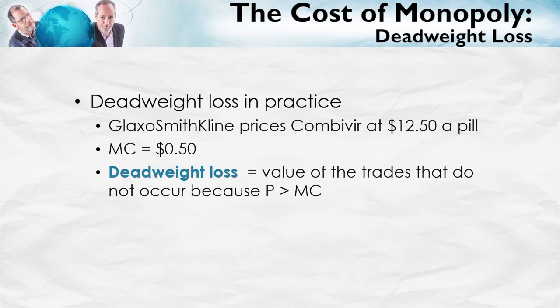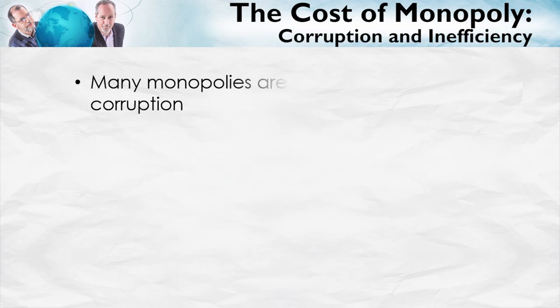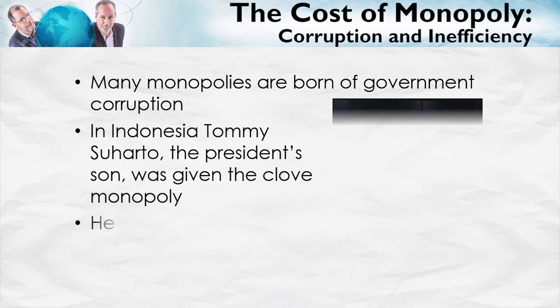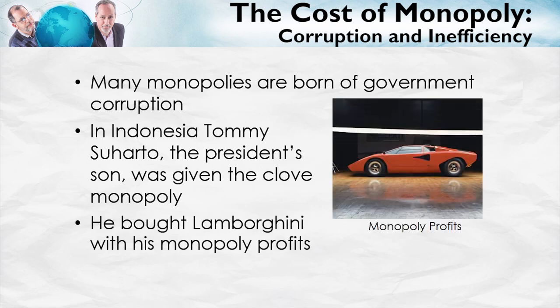But those trades don't occur because they aren't profitable to GSK. Many monopolies around the world are born of government corruption. In Indonesia, Tommy Suharto, the president's son, was given the highly profitable clove monopoly. He used the profits to buy Lamborghini — not a Lamborghini; he bought the entire company. These kinds of monopolies are unredeemed: they have costs and no social benefits at all.